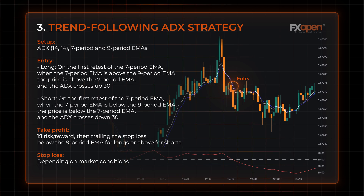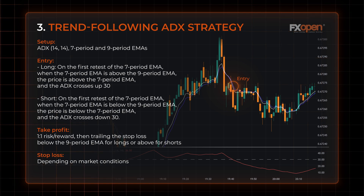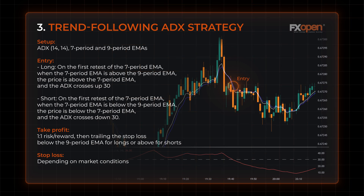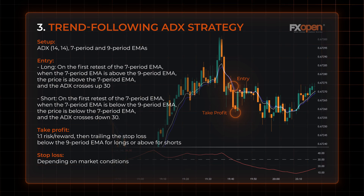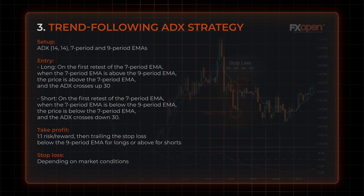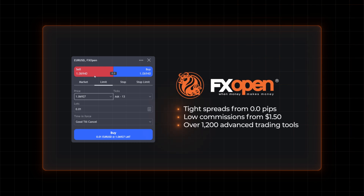When the 7-period EMA is below the 9-period EMA and the price is below the 7-period EMA, traders go short on the first retest. Traders often begin to take profits at a level that gives them a 1:1 risk-reward, then trail their stop loss below the 9-period EMA for longs or above it for shorts. The stop loss level depends on market conditions.